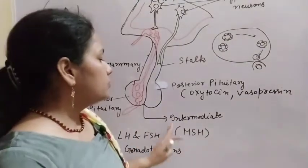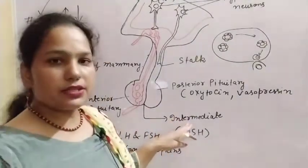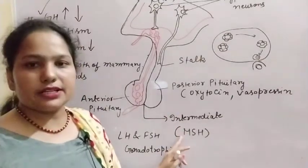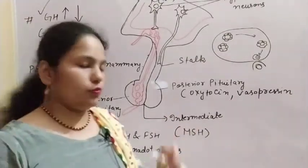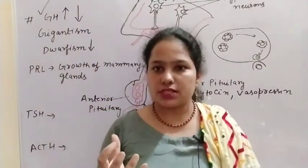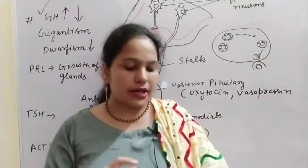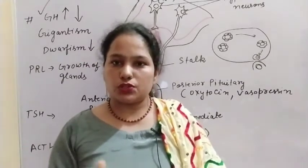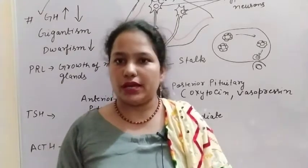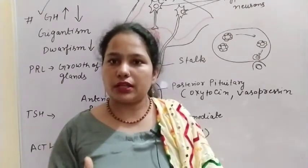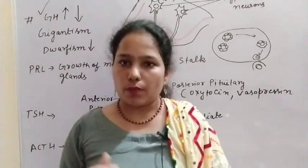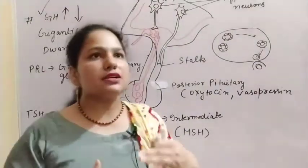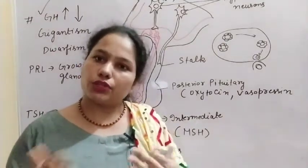The intermediate pituitary secretes only one hormone: melanocyte stimulating hormone. Melanocytes are related to melanin — the pigment in our skin. Melanin determines our skin complexion. If the melanin pigment is present in greater amounts, the skin is darker. This hormone stimulates melanin pigment production.